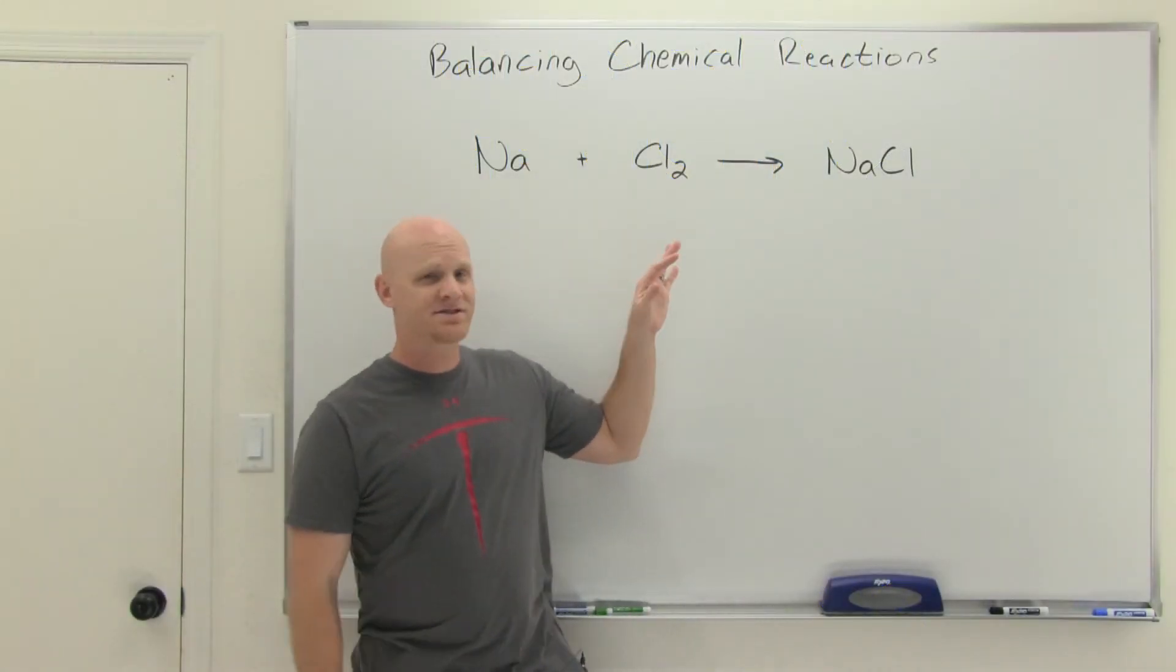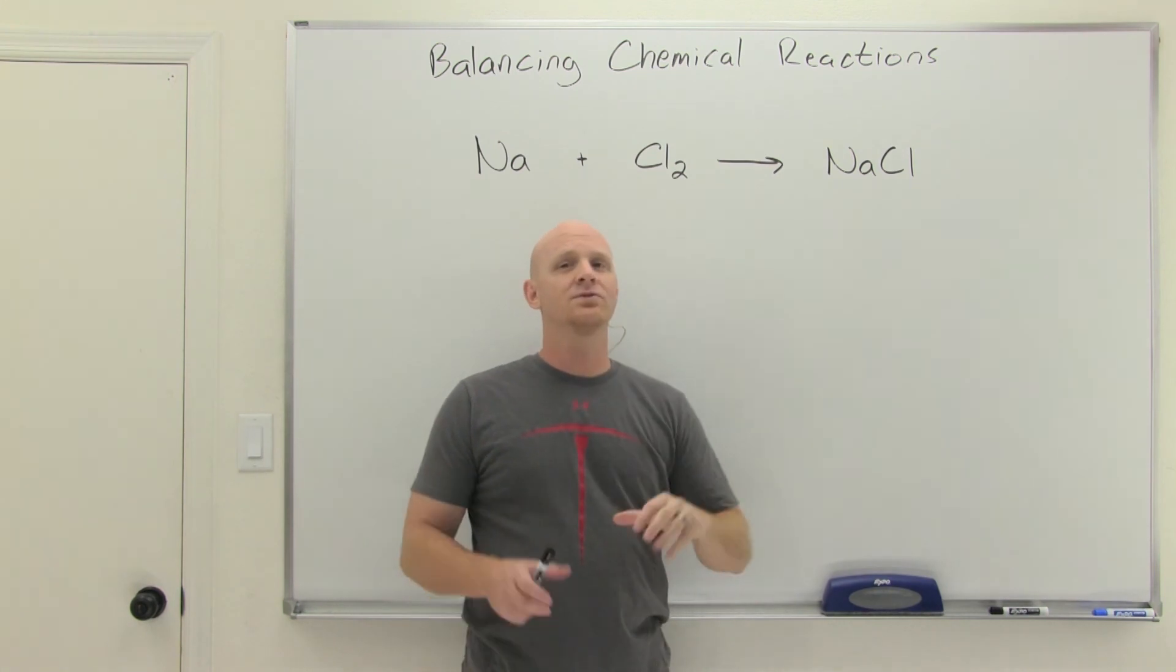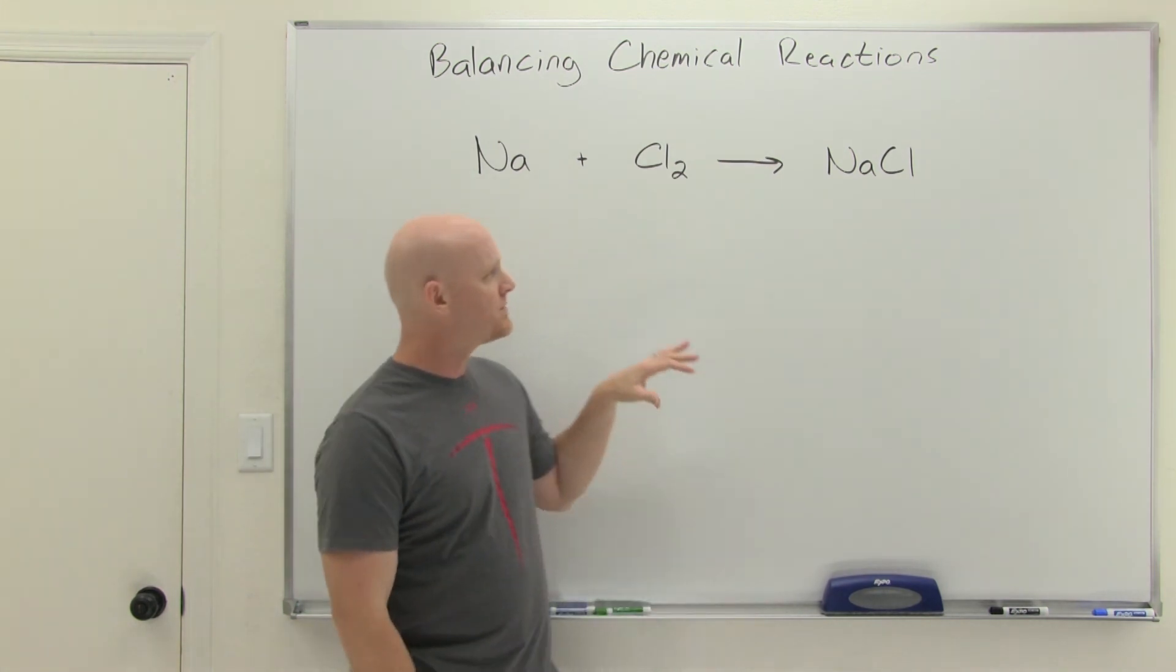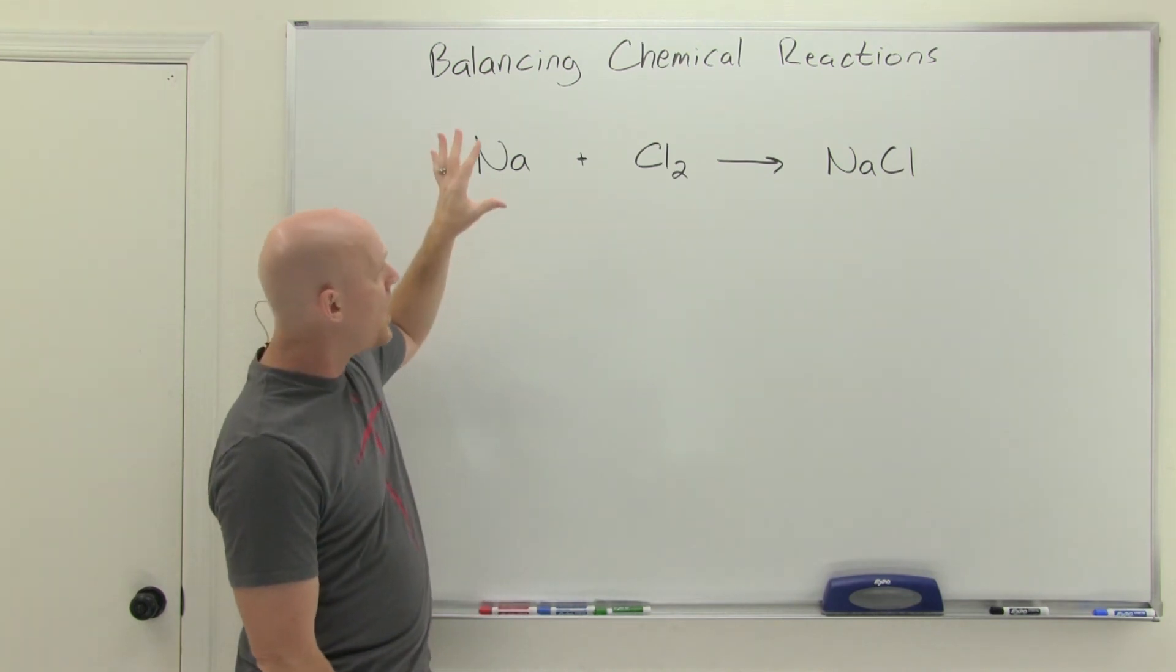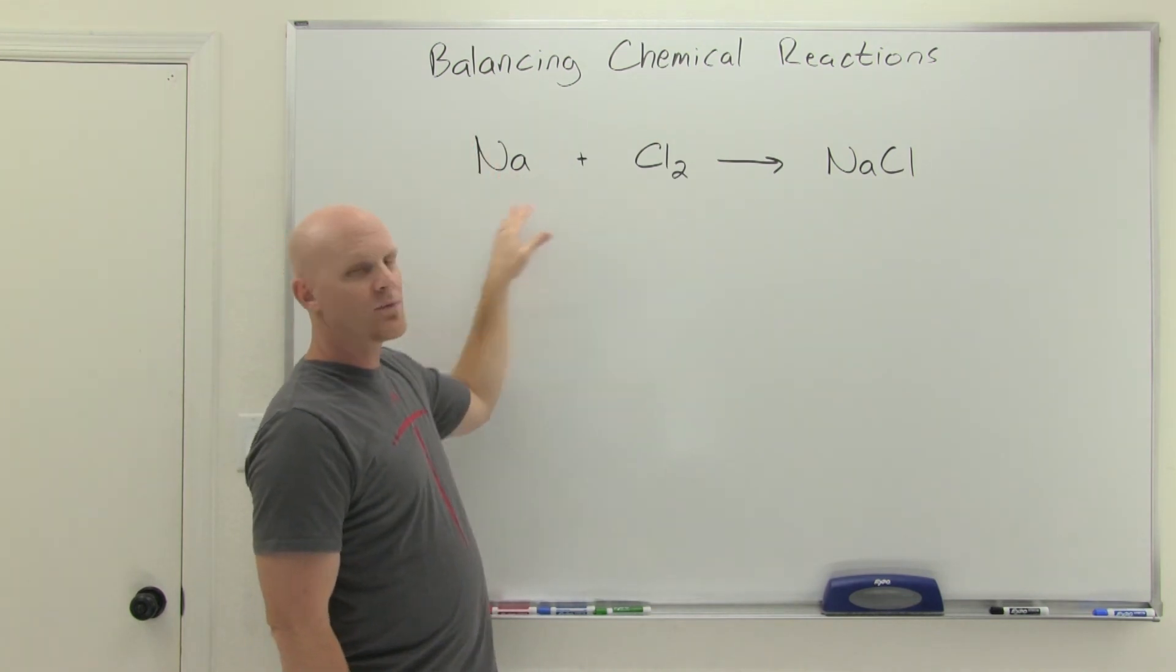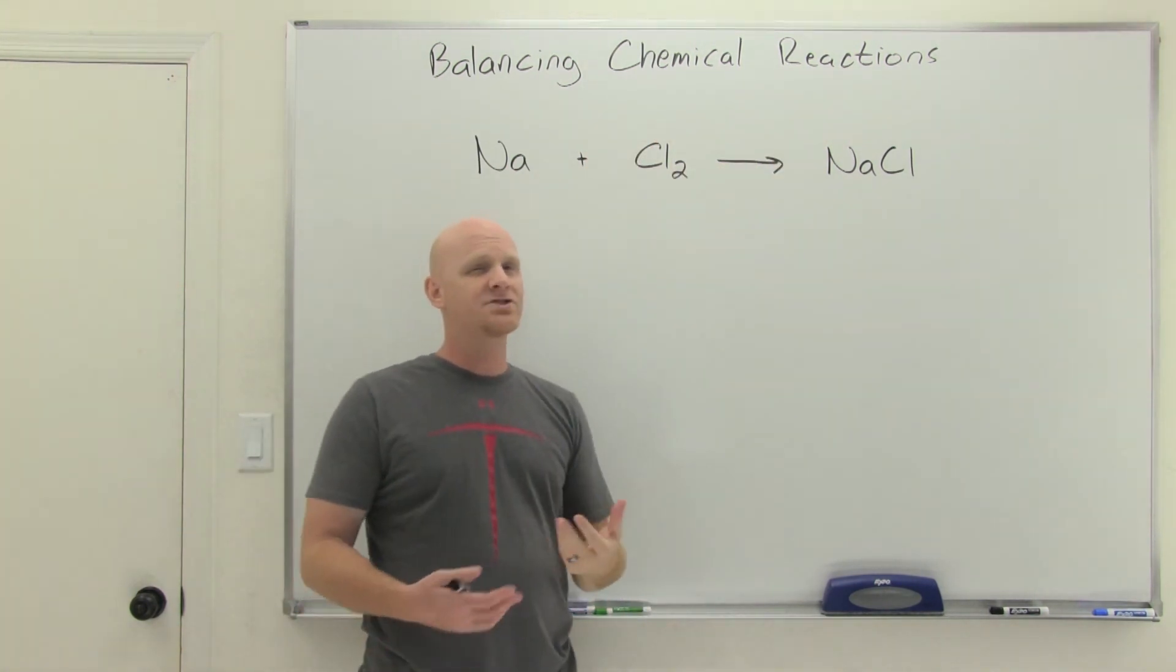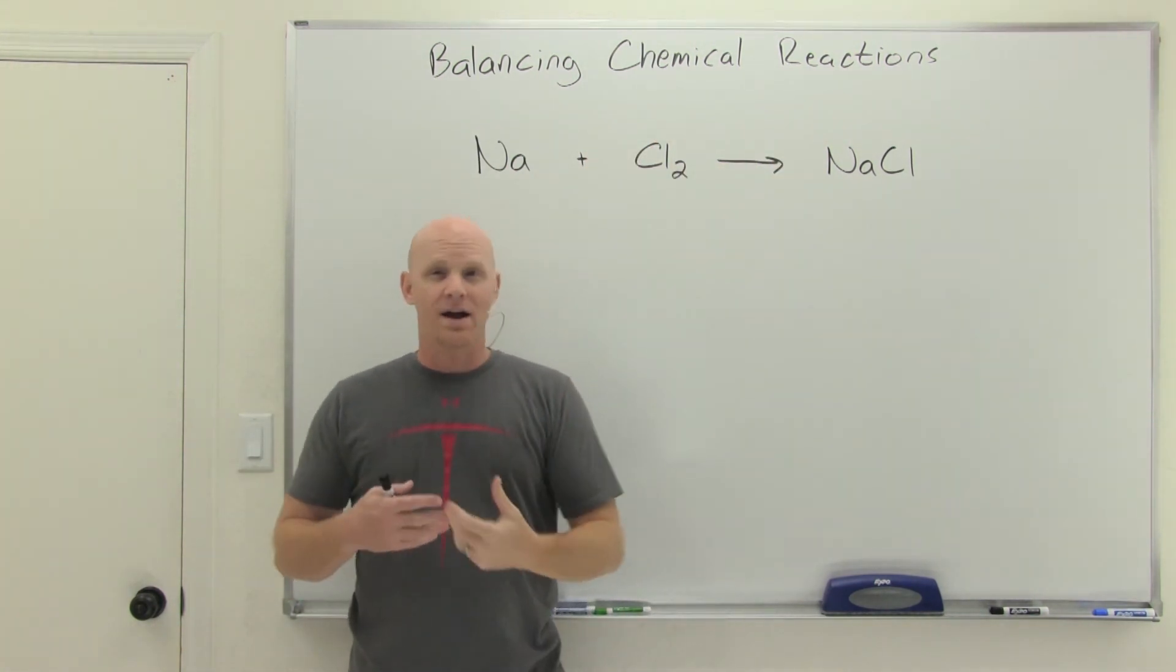So, balancing chemical reactions, this is one of those lessons that students really heavily associate with their high school chemistry experience. But the idea is that all of the elements on the reactant side are going to be balanced with the corresponding ones on the product side. In a chemical reaction, all of your atoms are going to be conserved.